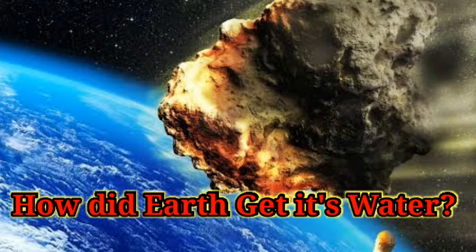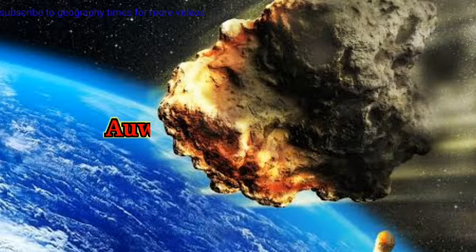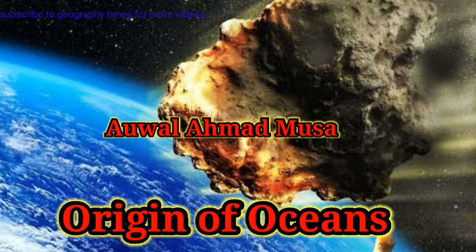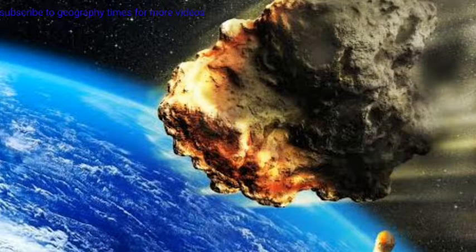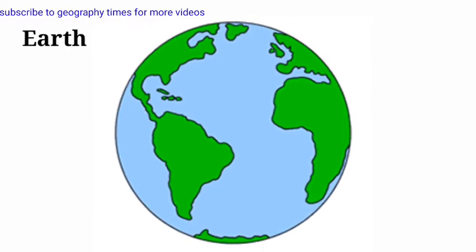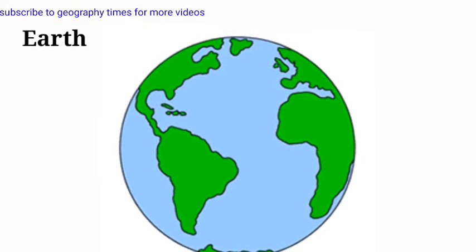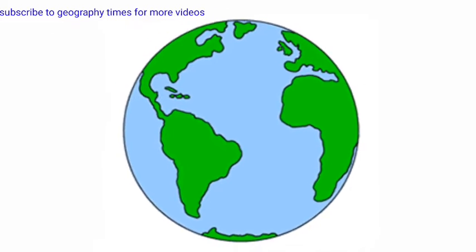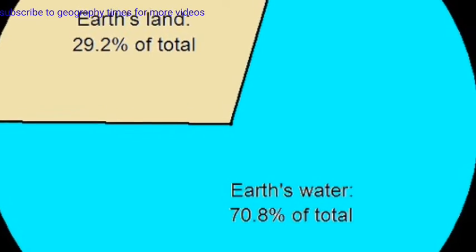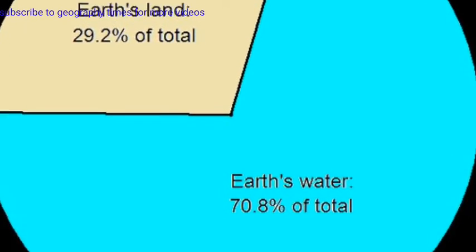In this video we will get to know how Earth gets its water, that is the origin of oceans. When we think about our planet Earth, we cannot forget oceans because the reason Earth looks blue is due to oceans. The surface of Earth is approximately 75 percent water and contains five oceans.